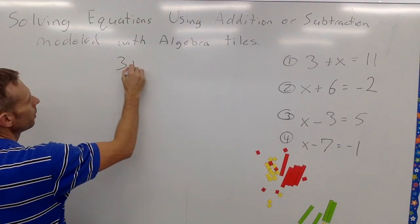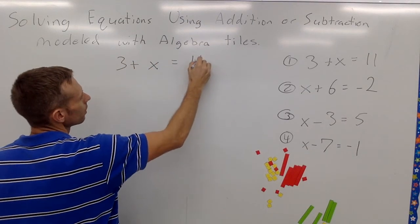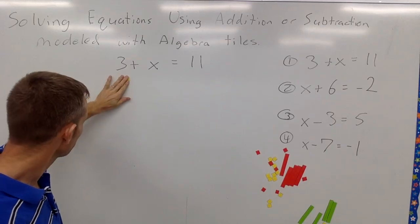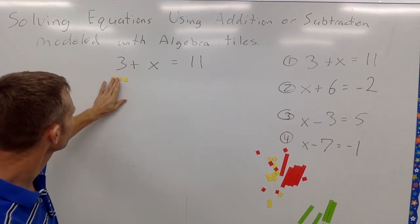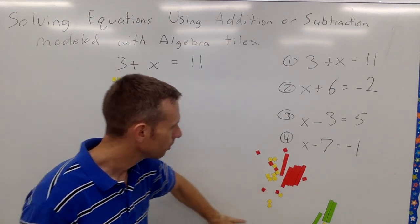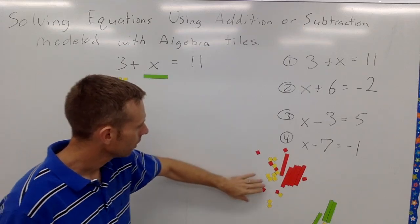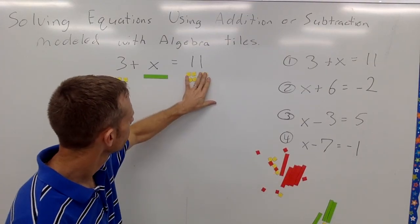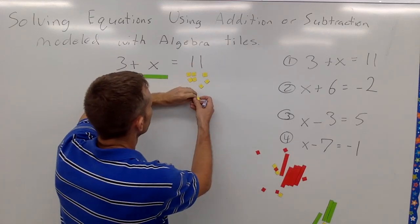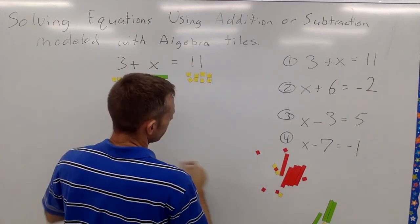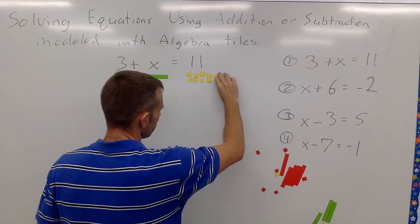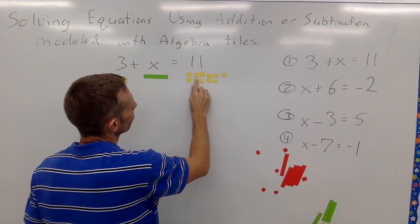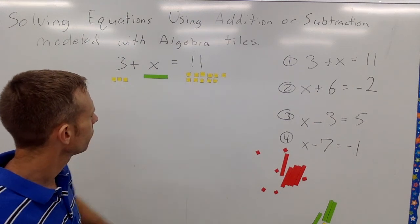Let's get started. I have the equation 3 plus X equals 11. I'm going to model the 3 with 3 positive yellow squares — yellow is positive — and the X we're going to model with a green positive tile. Then I have 11 on the other side: 2, 4, 6, 8, 10, 11. Okay, got it.